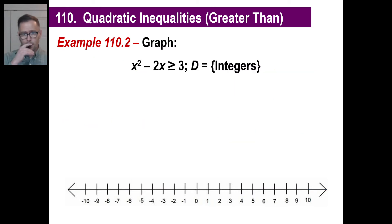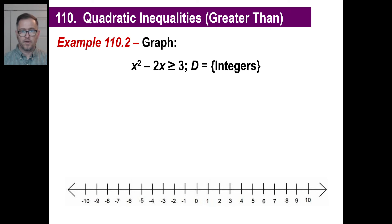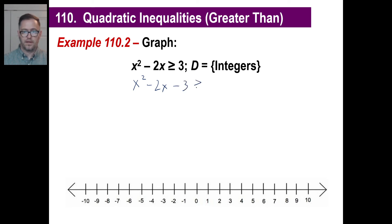Let's try another one. This time they're going to make you come up with those two binomials by factoring a quadratic equation. We have x squared minus 2x is greater than or equal to 3, and we're allowed to use integers. First, let's move the 3 over: x squared minus 2x minus 3 is greater than or equal to 0. Let's go ahead and factor that.